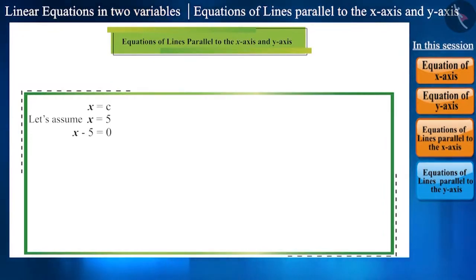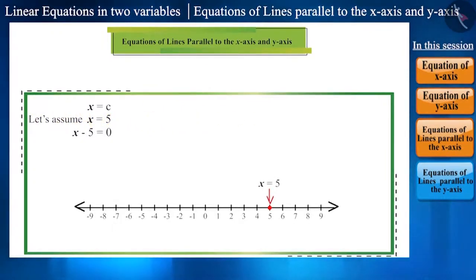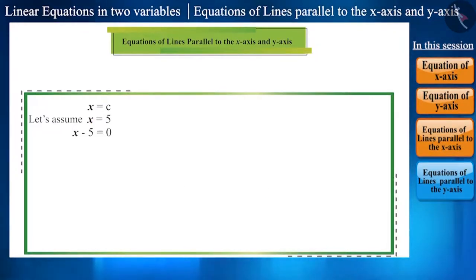which can be written as x minus 5 is equal to 0. The solution of this linear equation in one variable will be x is equal to 5, which lies on the number line here in the form of a point. Now, if we write this in the form of linear equations in two variables as x plus 0y minus 5 is equal to 0, then we will get infinite solutions. And, 5, 0 will be one of the solutions which will lie on the x-axis.